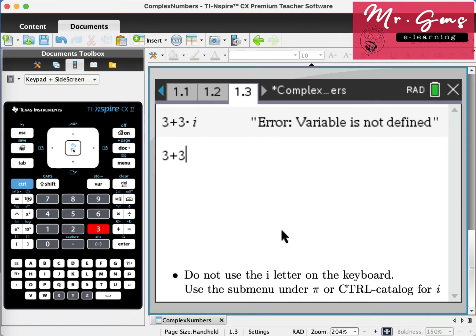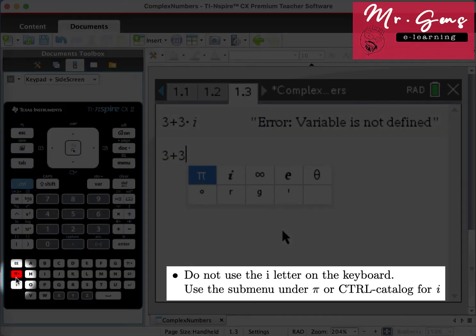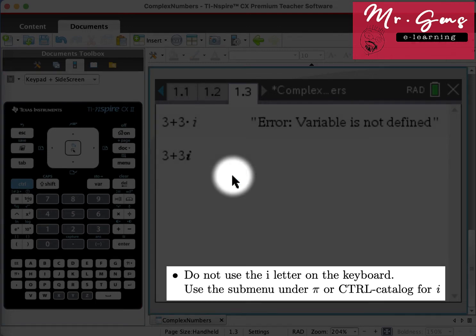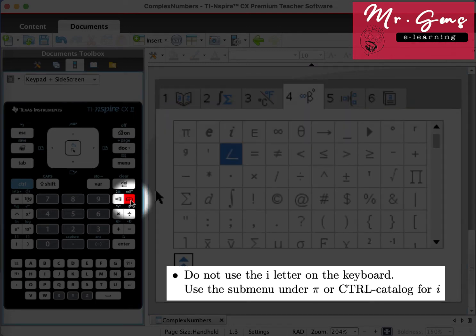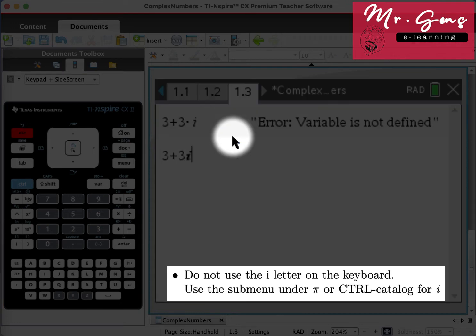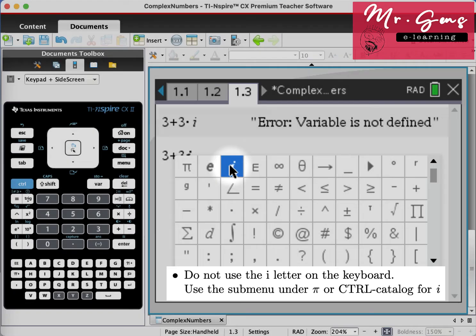Your options for i: you can press the π button, i is there. You can press the Catalog button and 4 again, i is there. Or you can press Ctrl Catalog button, i is there as well.